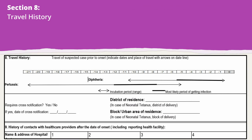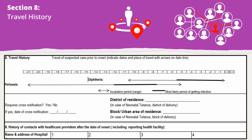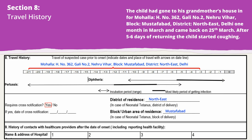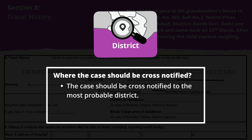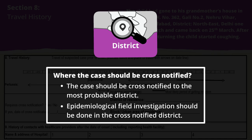Section 8 covers travel history prior to onset of disease. It helps to identify the place from where the case might have acquired the illness. The arrows show the range of the disease-specific incubation period, with the thick part indicating the most likely period of infection. Take a complete travel history for travel during the incubation period and write the addresses in the CIF. Based on travel history, the case should be cross-notified to the concerned district, and epidemiological field investigation should be done in the cross-notified district.